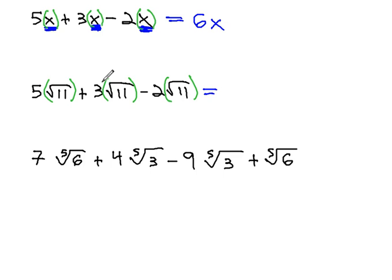We had 5 root 11, 3 more gives us 8 root 11, minus 2 will give us 6 square roots of 11. Notice, as we add and subtract, the square root part remains the same, and we simply add or subtract the numbers in front of the like radicals.